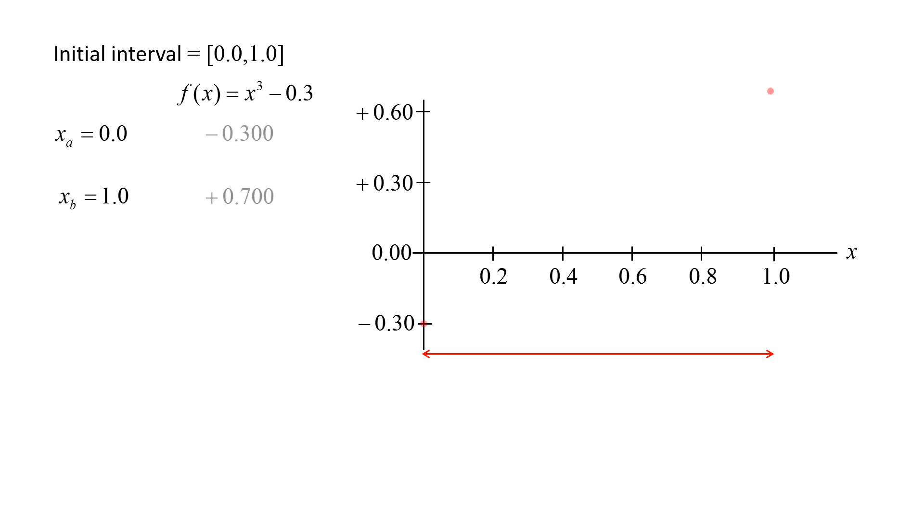The function evaluated at xa is negative 0.3, and the function evaluated at xb is positive 0.7. Since the function changes sign between these two values of x, we know the root exists between 0 and 1.